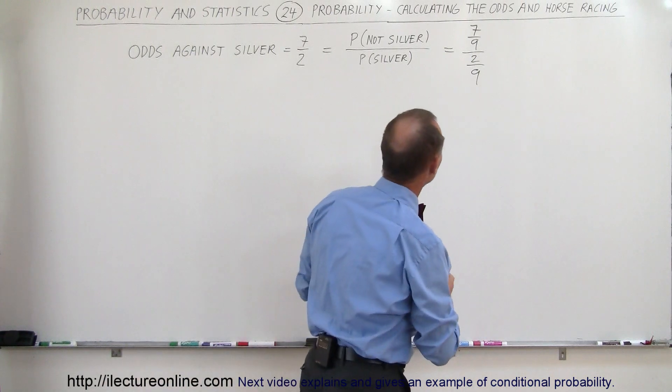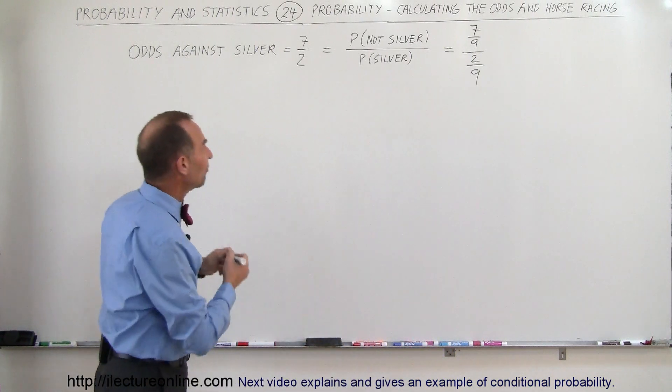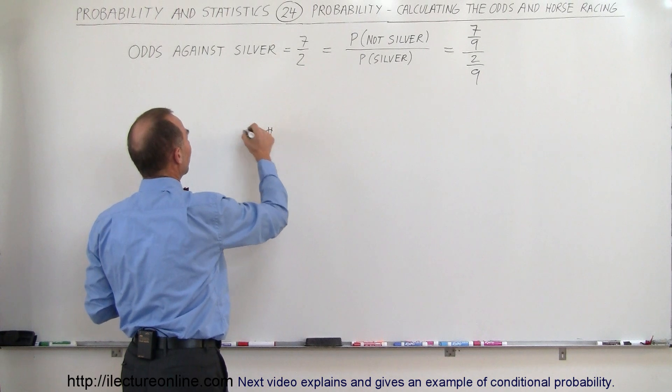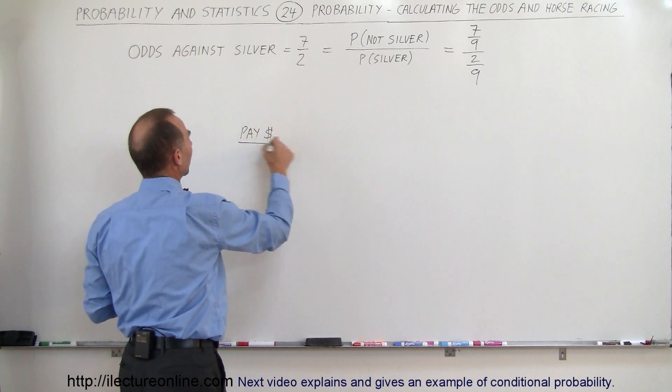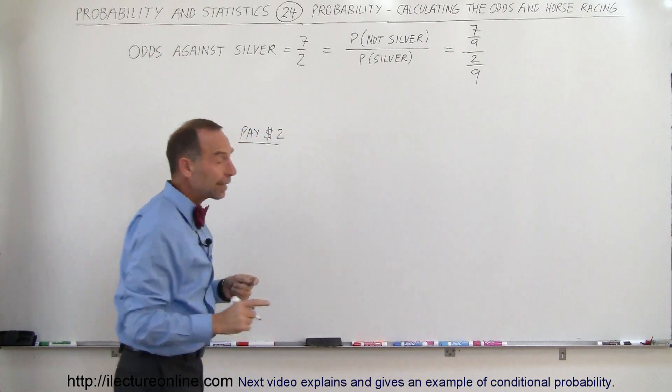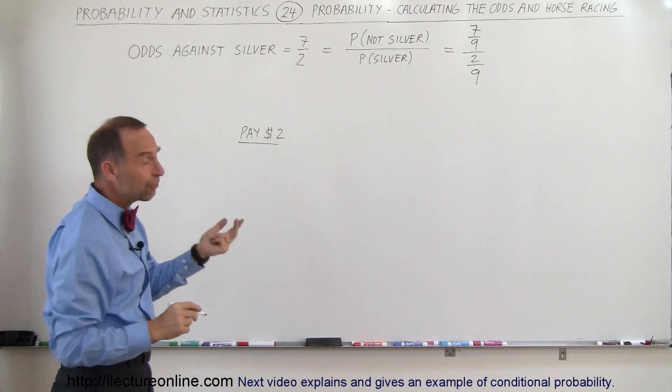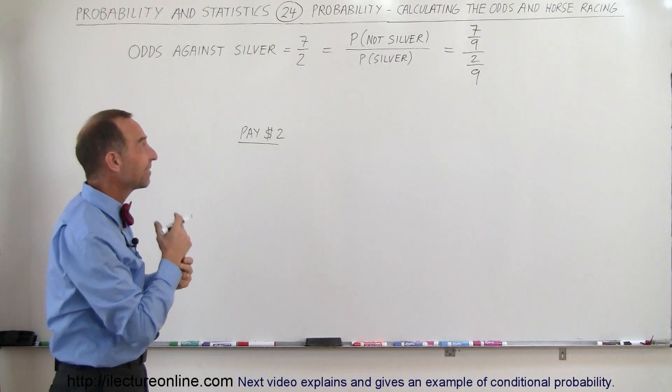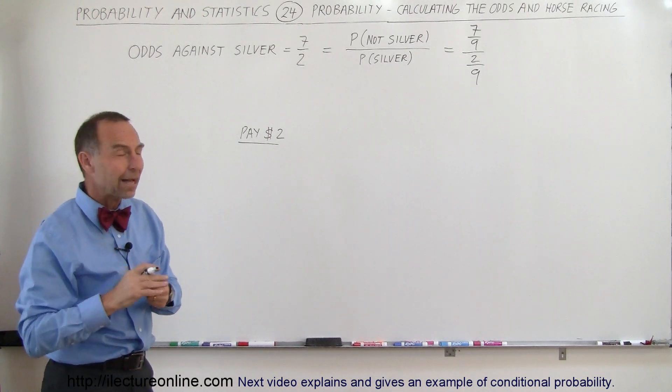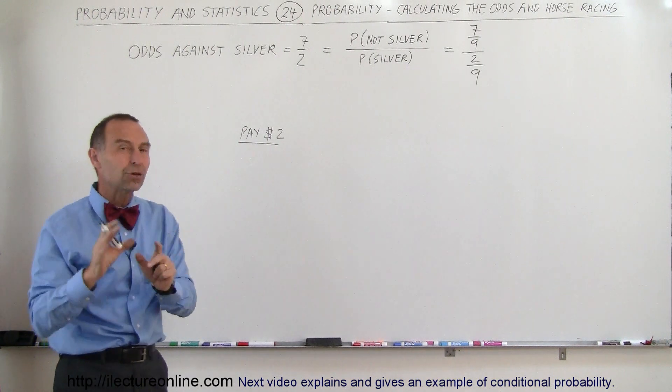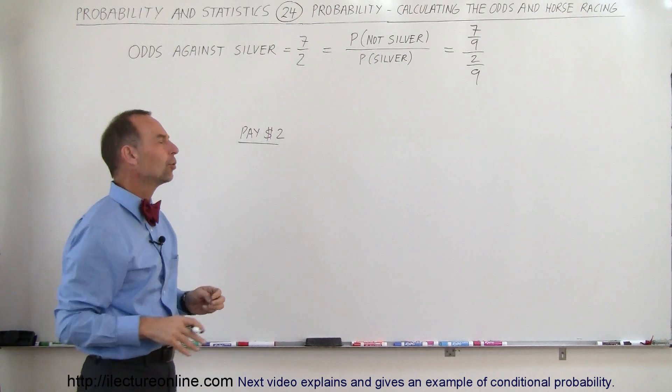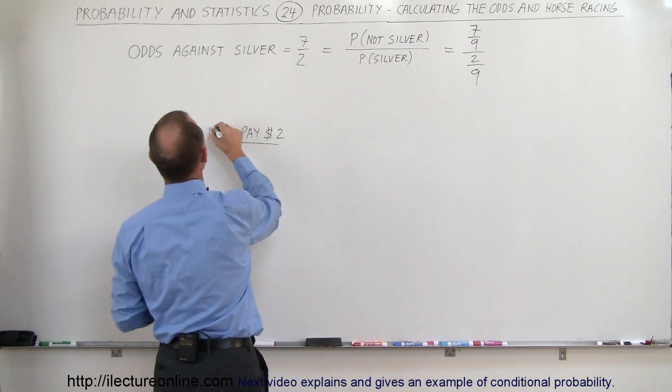And so what that means is that if you pay a $2 ticket, so if you pay $2 on the horse and Silver wins, you get a 7 to 2 payout, which means you'll get $7 payout on the $2 plus typically your ticket back, but that used to be kind of in the old days.